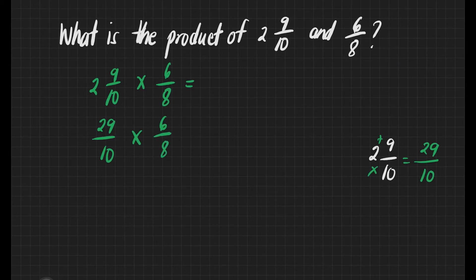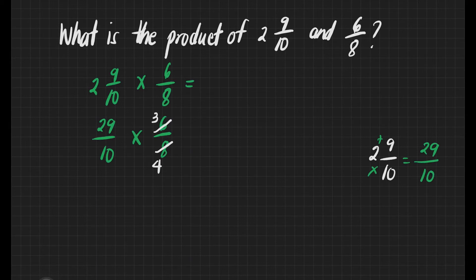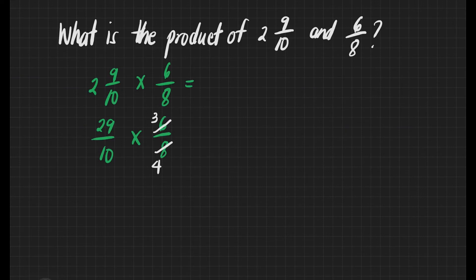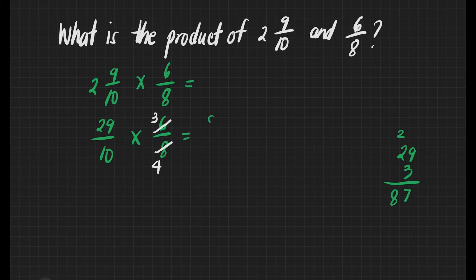Is there something that we can reduce to lowest terms? Yes, we can reduce 6 eighths. What number can we divide 6 and 8? That's 2. 6 divided by 2 is equal to 3, and 8 divided by 2 is equal to 4. Now, is there something that we can cancel? No, we don't have any. So we can proceed to multiplication of fractions. Let's multiply 29 times 3. 9 times 3 is equal to 27, write 7 and carry 2. 2 times 3 is equal to 6, plus 2 is equal to 8. So our answer here is 87. Then, 4 times 10 is equal to 40. We have 87 over 40.